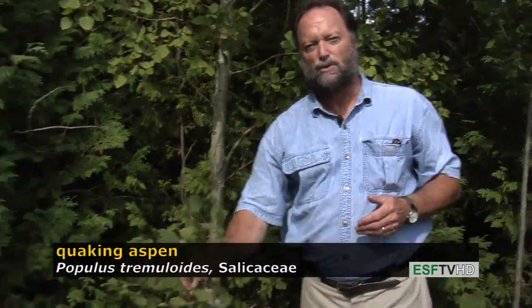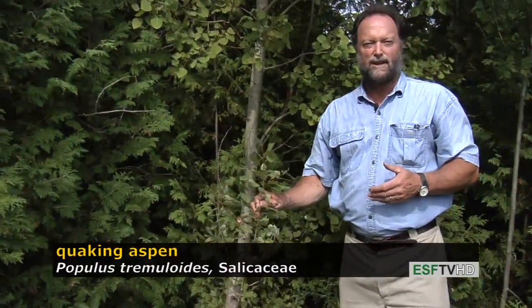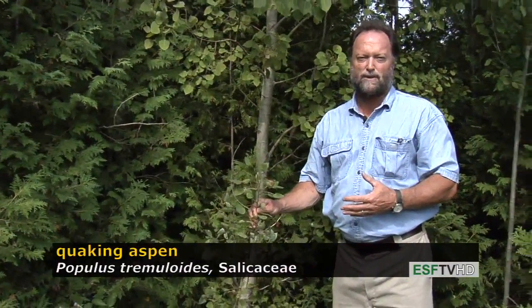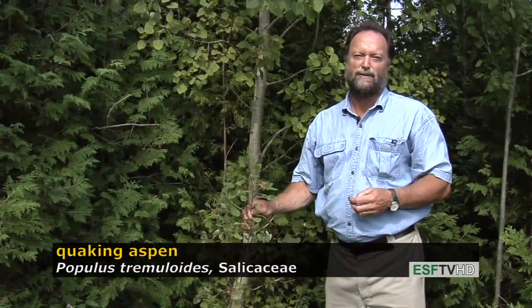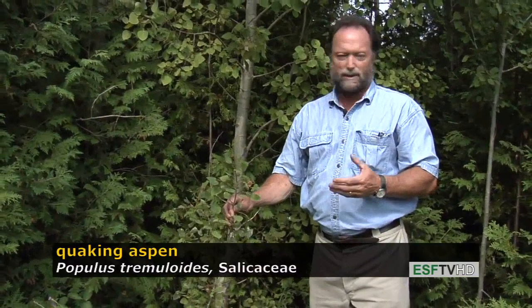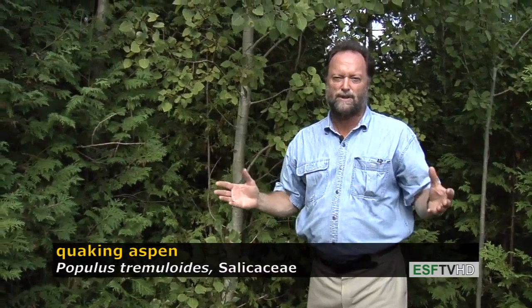Quaking aspen is also a root sucker. It reproduces quite often by forming root suckers away from the main tree. It does reproduce by seeds as well, but the trees are dioecious, so the female trees are the only trees that can produce seeds. The seeds only live for about three weeks in June, and they have to colonize an open area with lots of sunlight in order to survive.